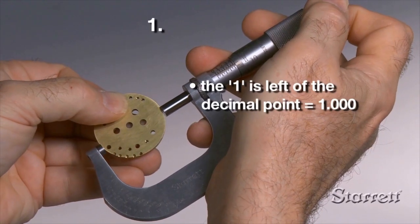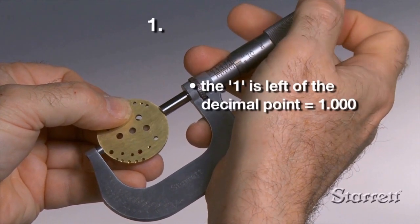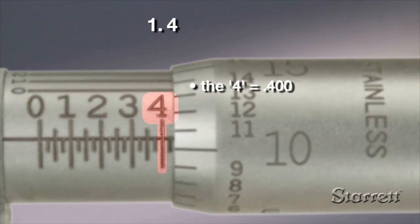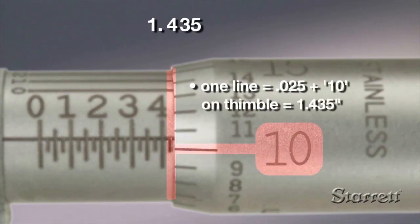For micrometers with ranges greater than one inch, use the lower value of that micrometer's range to the left of the decimal point, and the micrometer reading to the right.